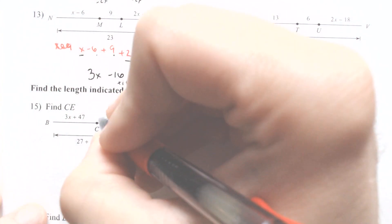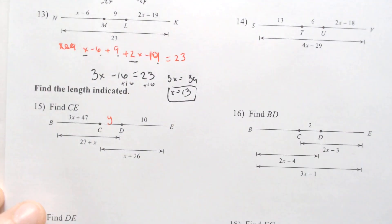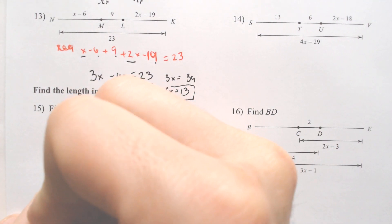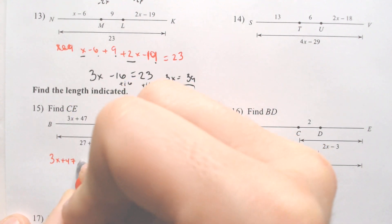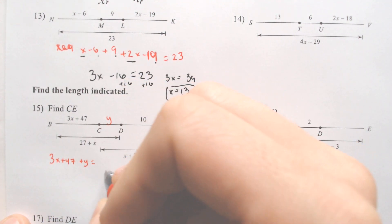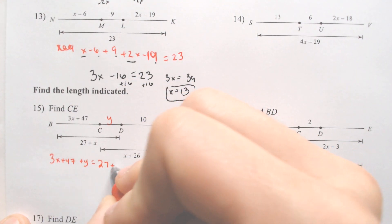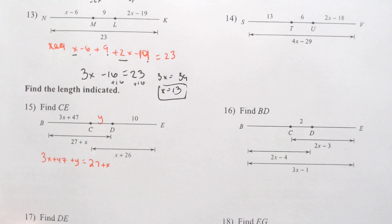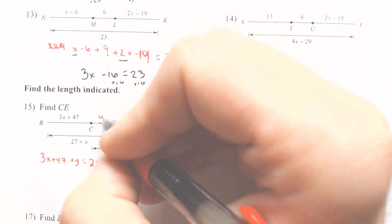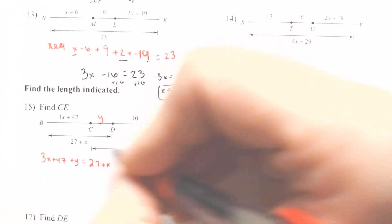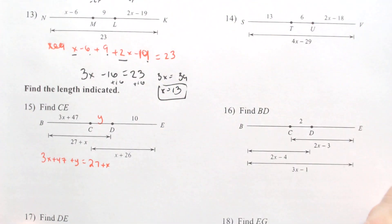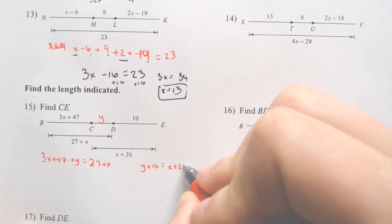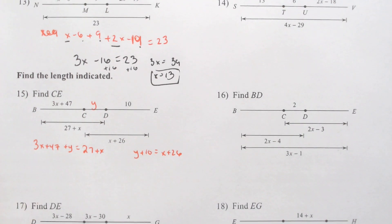I'm going to call this part Y, or I could call it CD. I know that 3X plus 47 and Y would have to equal 27 plus X. I also know that Y and 10 would have to equal this chunk right here from X to X plus 26. So Y plus 10 would have to equal X plus 26.